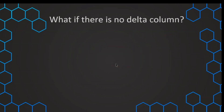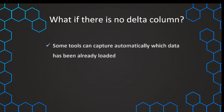But now the question might be: what if there is no delta column? First of all, usually there is a delta column — usually there is a timestamp we can use. But sometimes if the data is really not in good shape and we don't have a delta column available, we have a few alternatives. There are even some tools that can automatically capture what data has been loaded already by the metadata, and in that case this is done automatically without us needing to worry.